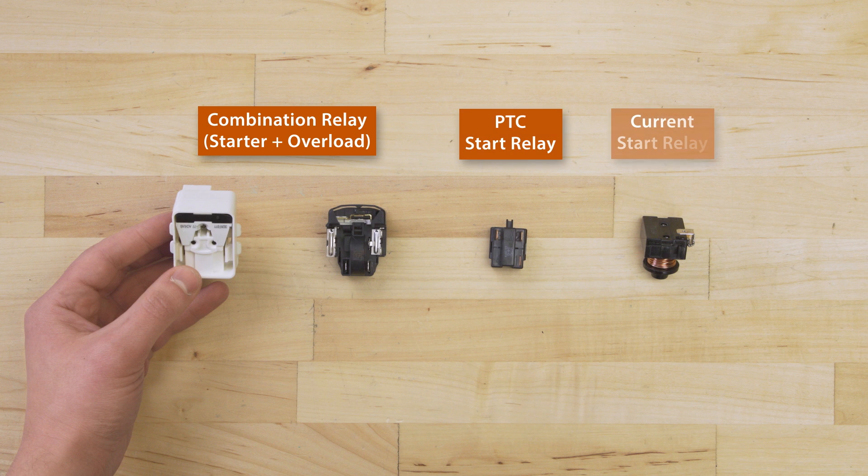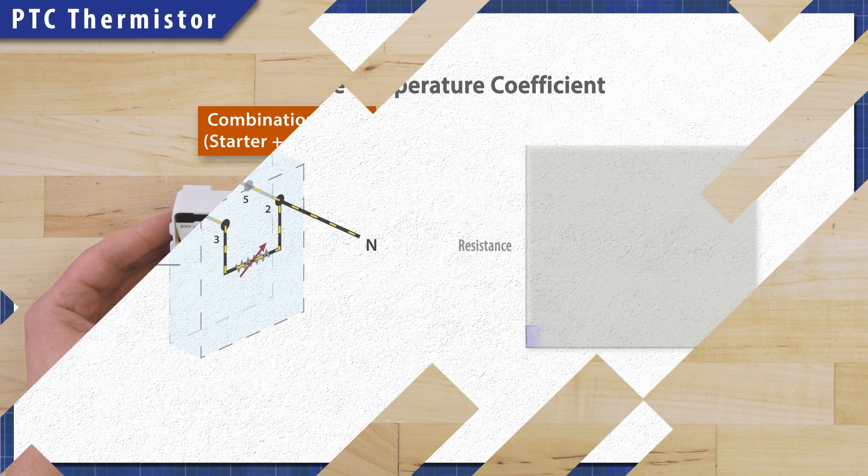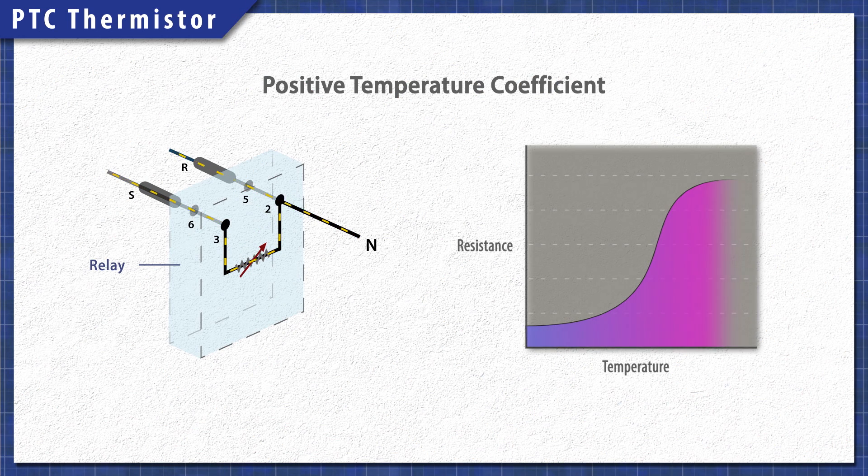The start relay will either be a PTC thermistor or a current start relay. A PTC thermistor is a heat sensitive resistor. As current flows through, the thermistor heats up and the resistance increases. When it's warm, the thermistor disconnects the start winding. This is why it takes a few minutes to cool down before you can restart your fridge.